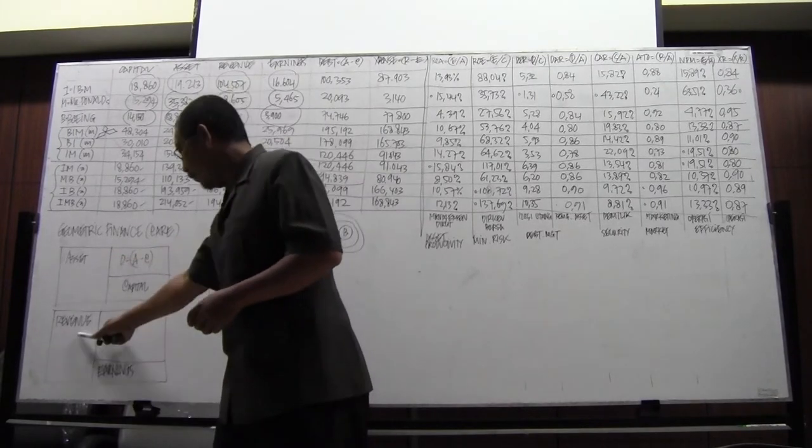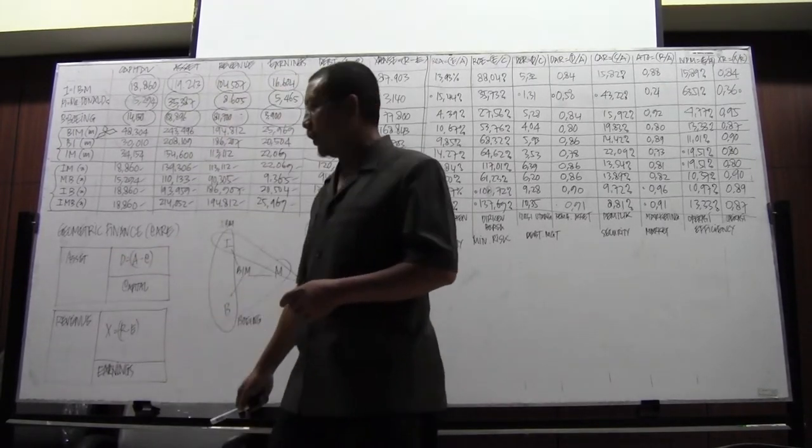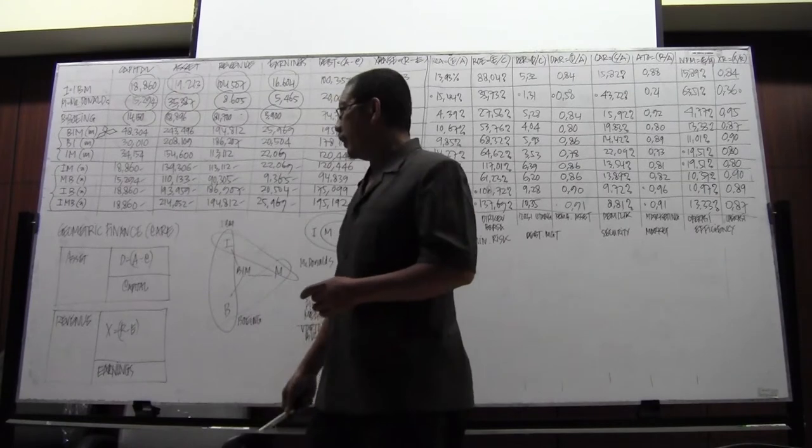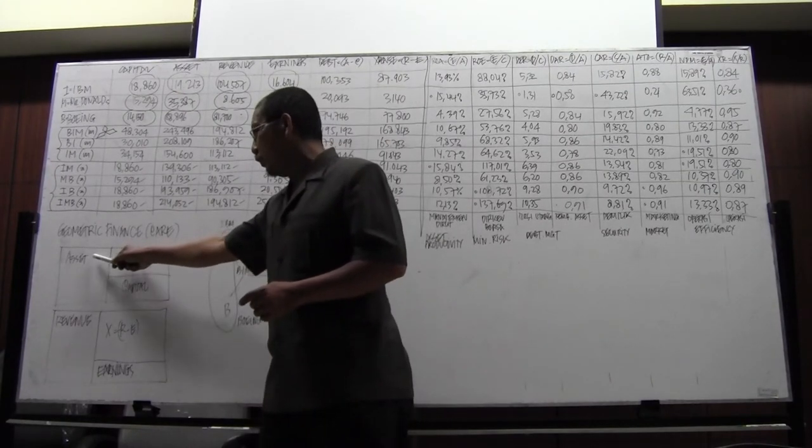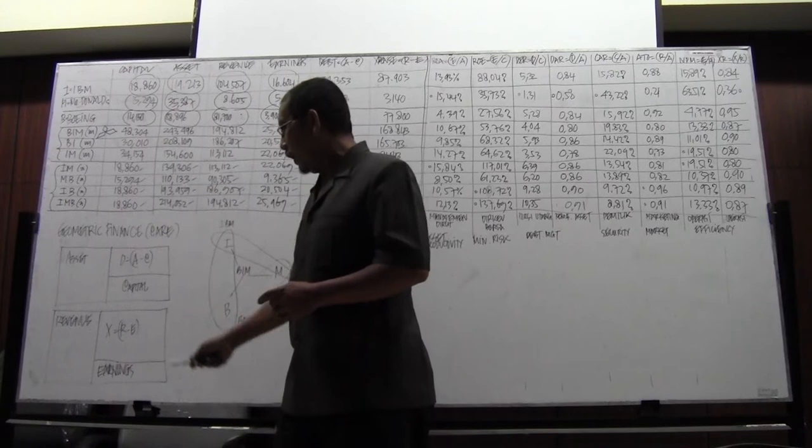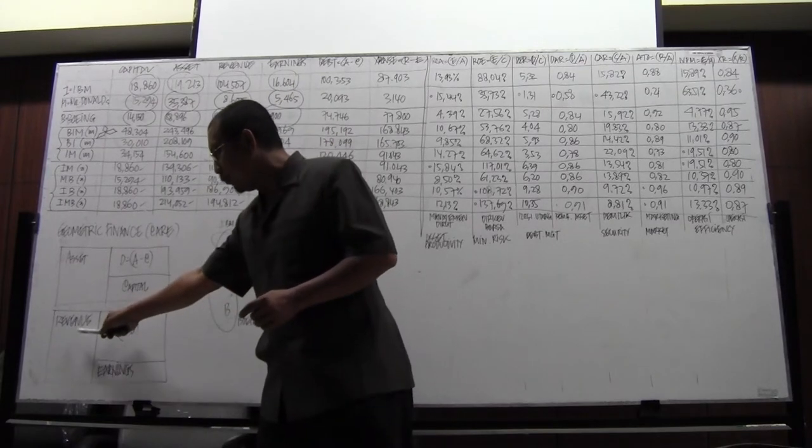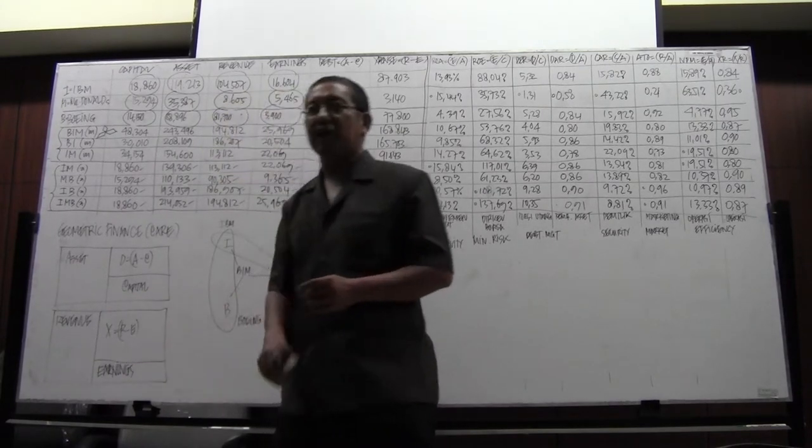asset, revenue, and earnings. If you know the CARE, then you can know the debt, which is the difference between the assets and the capital, and the expenses will be the difference between the revenue deducted by the earnings.